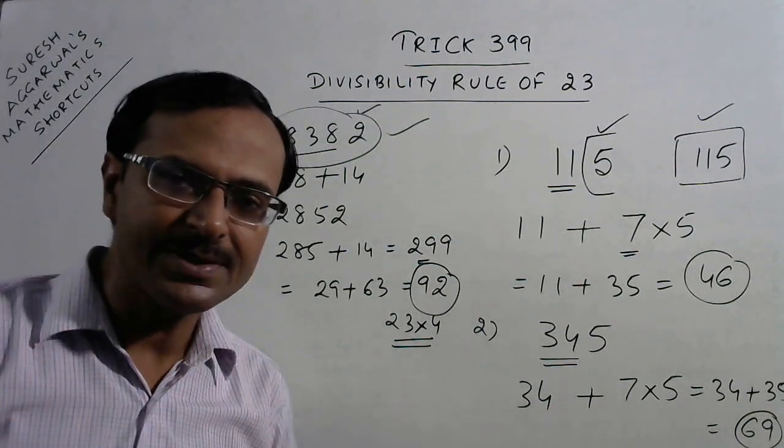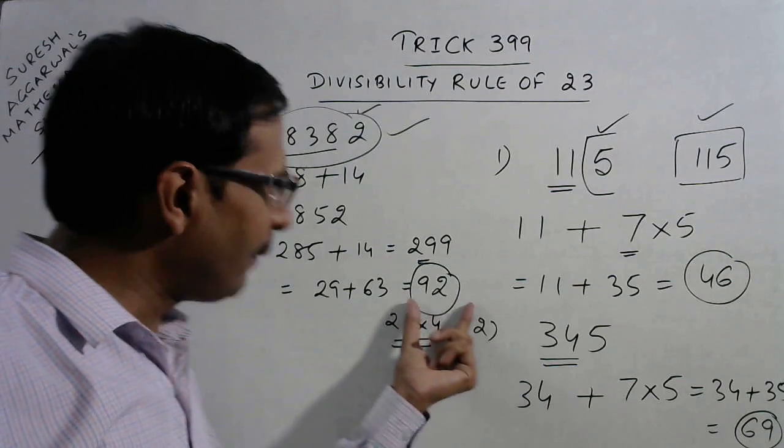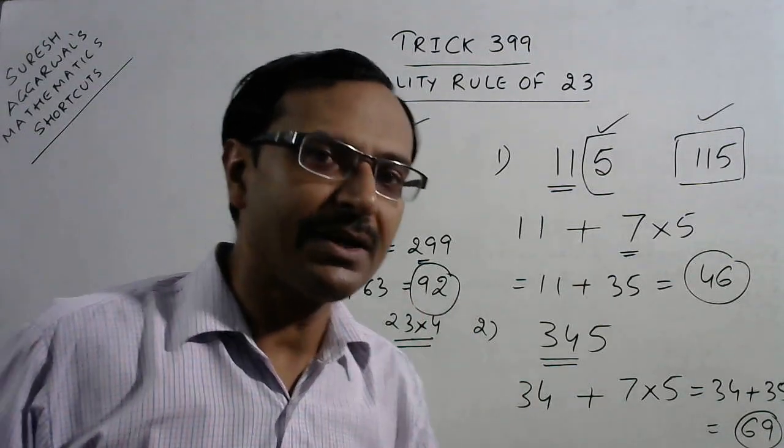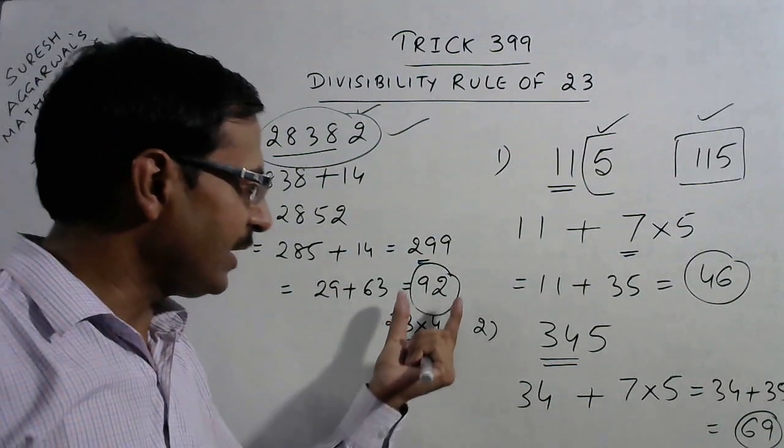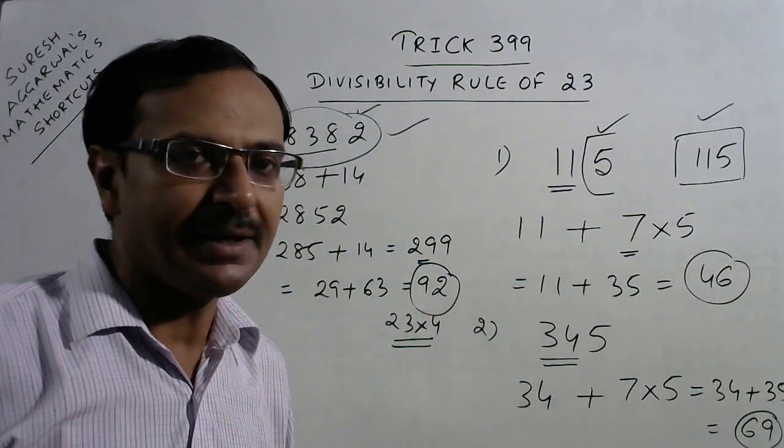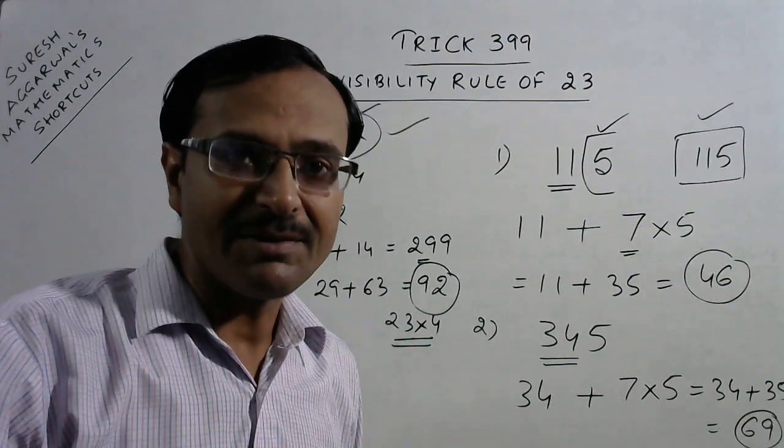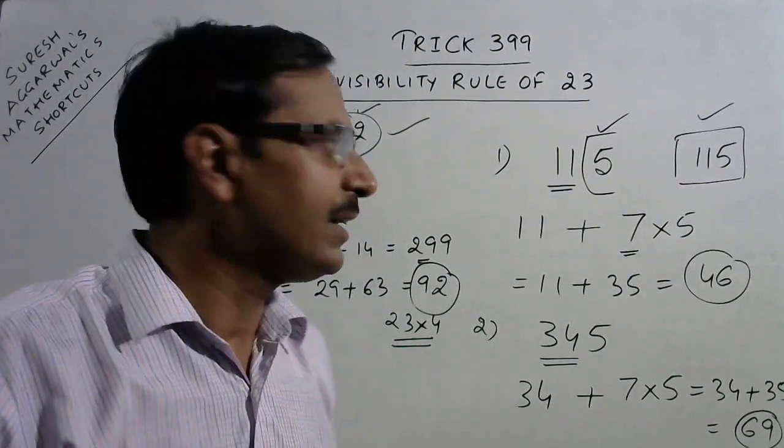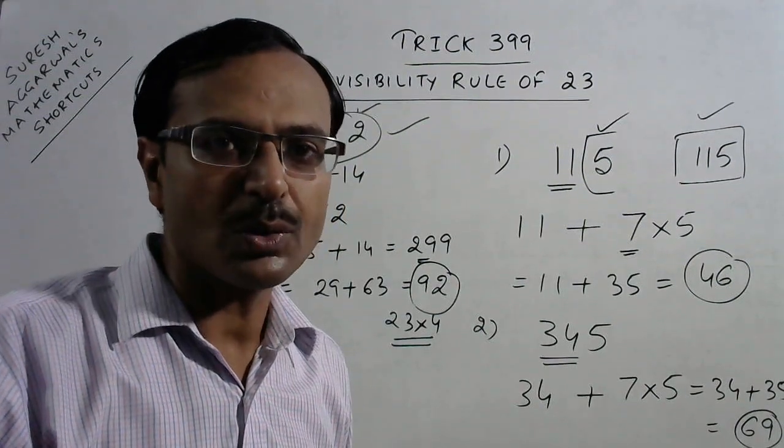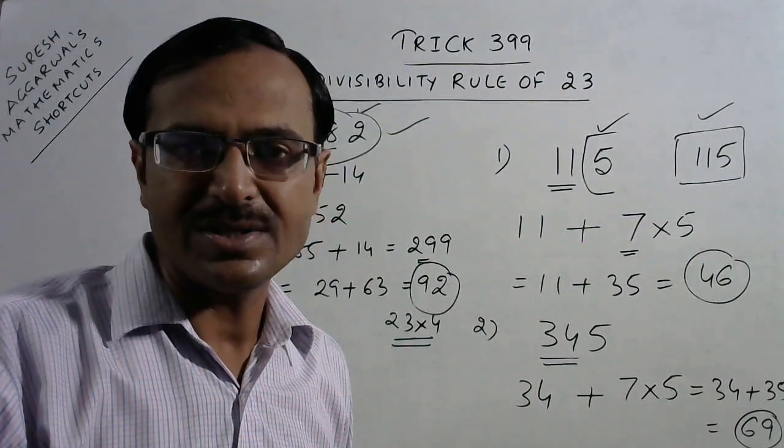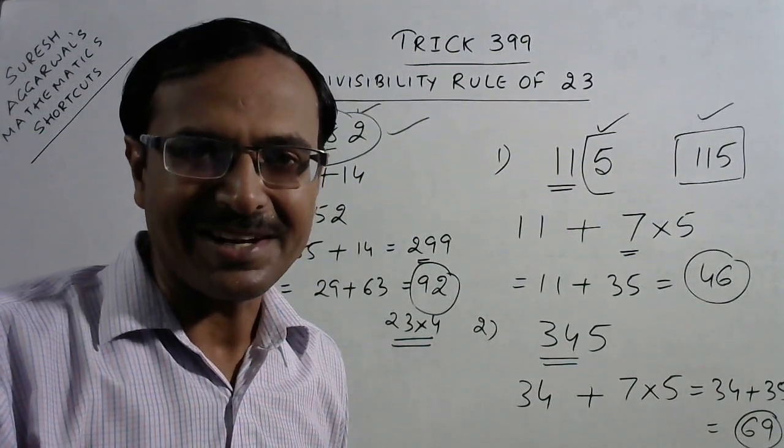You see students, you can repeat that step until you get a number which is easily identifiable whether it is divisible by 23 or not. And if the result is divisible by 23, the entire number will be divisible by 23. This is a very rare method of finding divisibility by 23. Practice this and I am sure you will use this in questions of LCM, HCF and so on. If you like it, share the video and subscribe the channel.